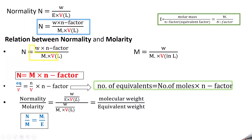Normality equals weight of solute × N factor divided by molecular weight × volume in liters. Molarity equals weight of solute divided by molecular weight × volume in liters. Comparing the two: normality = molarity × N factor. So if you know normality you can calculate molarity, or vice versa, using N factor.